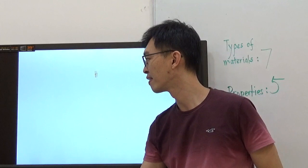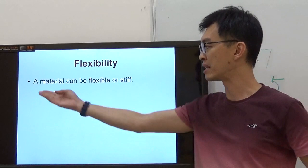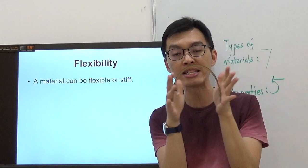Now flexibility. I have this ruler. A material can be flexible or stiff. Is it flexible? Yeah, flexibility means the ability to bend something. It's easy to bend, so this ruler is flexible.